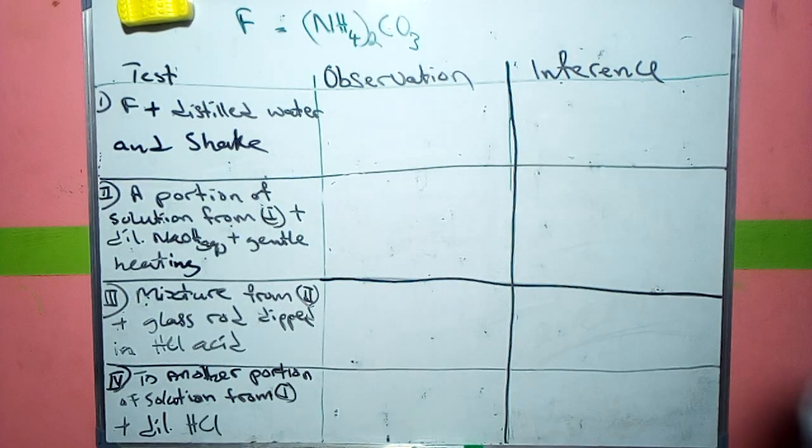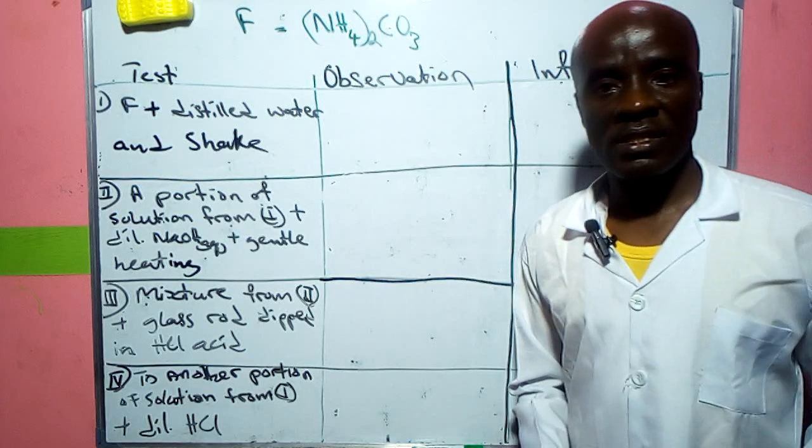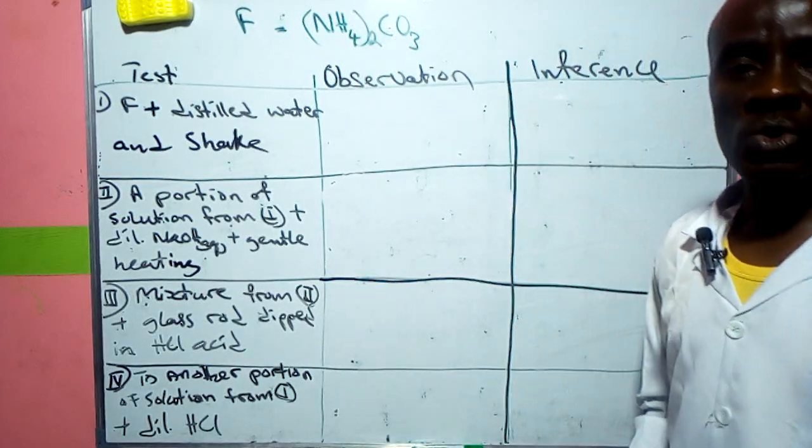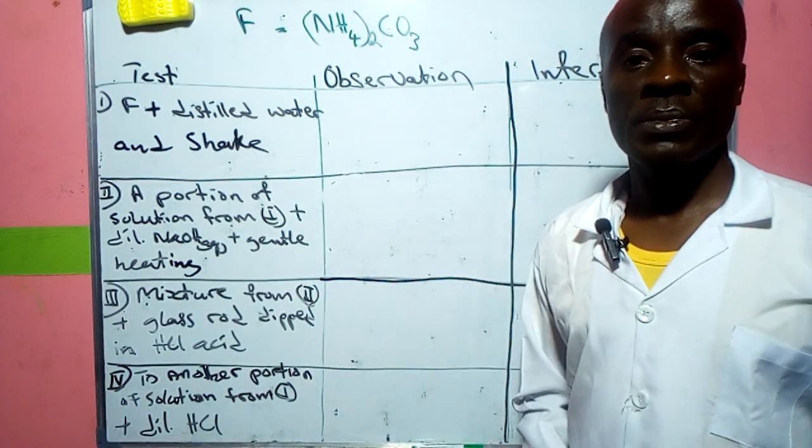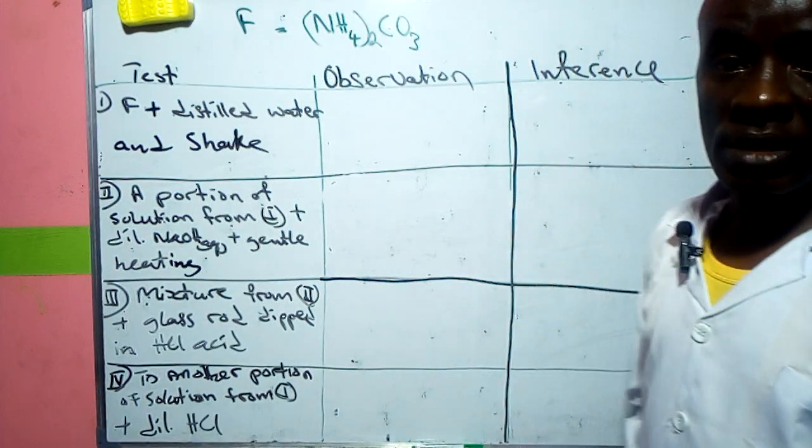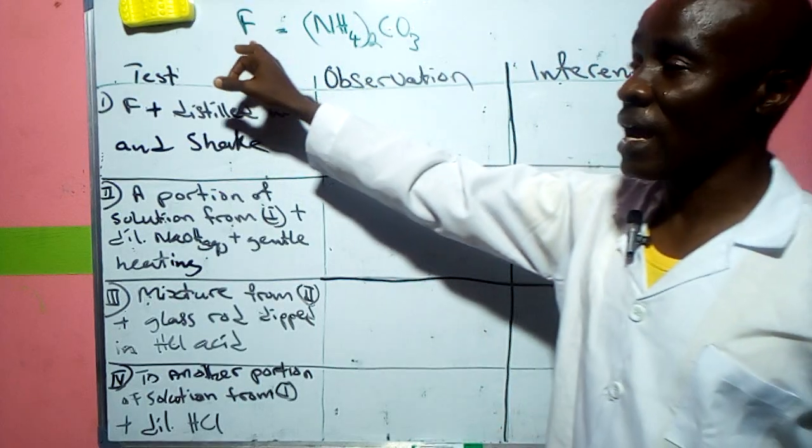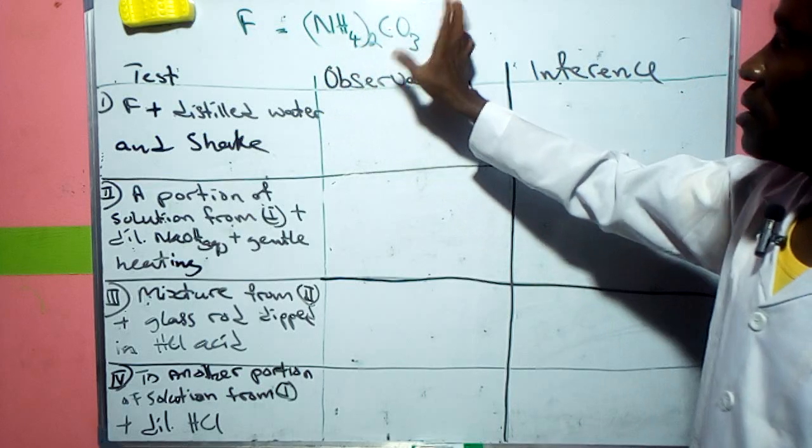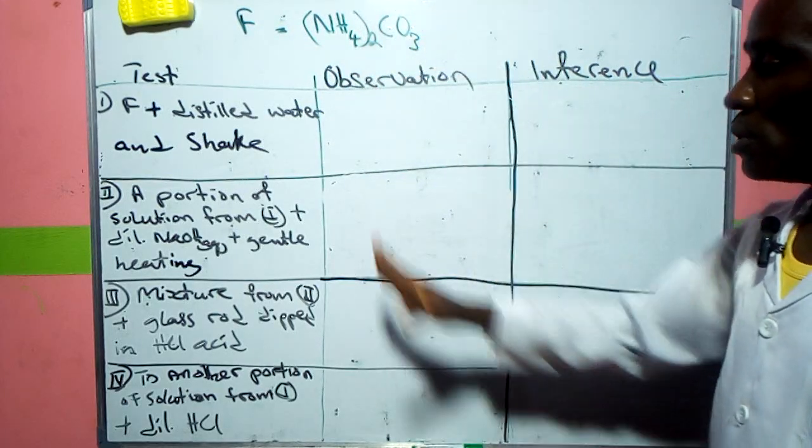Hello everyone, welcome to Study Guide Forum. Today we are going to be looking at the salt analysis for chemistry 2024 alternative B. In this analysis we are looking at the salt given to us, tagged F, which is ammonium trioxo carbonate. These are the possible tests that you are likely to expect.